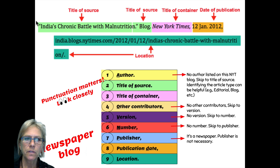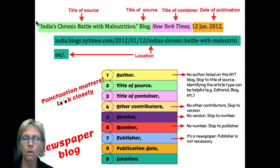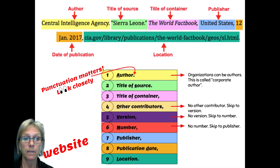In this first instance, you can see that there is no author — the author would be highlighted in yellow, and there is none. So we just leave that out and go straight to the next item in the list of elements.